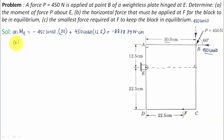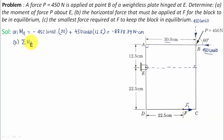Now for Part B: we need to calculate the horizontal force that must be applied at F for the block to stay in equilibrium. Let's say we apply that horizontal force in the right-hand direction and name it F1. For equilibrium, the summation of moments of all forces about E must equal zero. We take into consideration 450 sin 60, 450 cos 60, and F1.